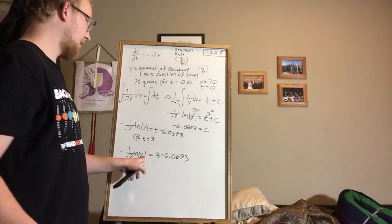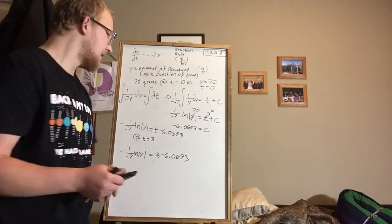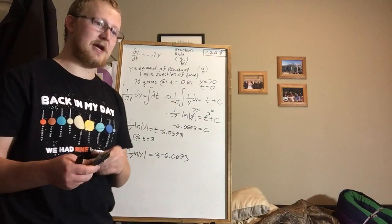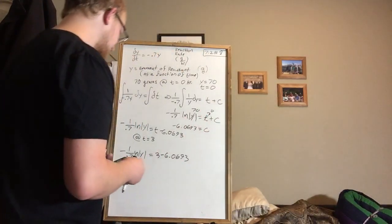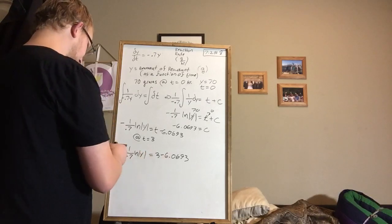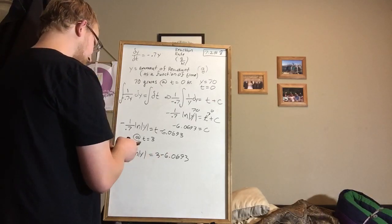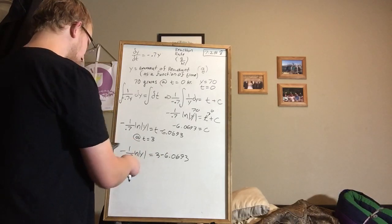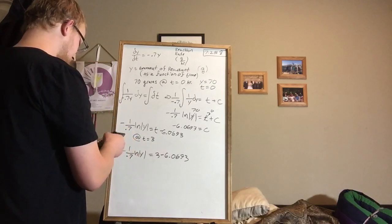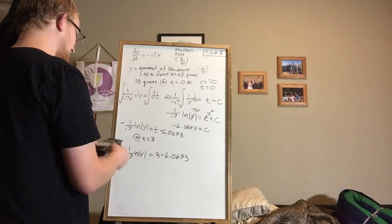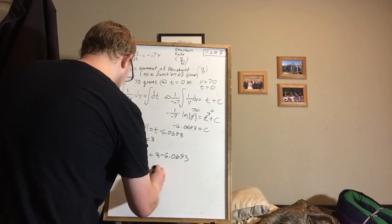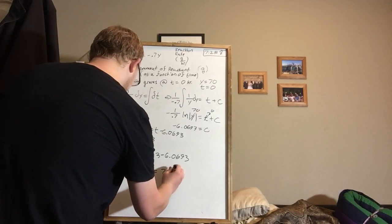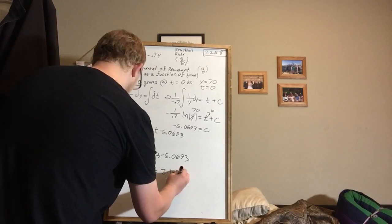And of course we're solving for y, because y is the amount of reactant. And that's what the problem is asking for, is how much reactant will be around after 3 hours. So I'm going to take 3 subtract 6.0693, then times it by 0.7 with a minus sign in front of it. And that tells me that the natural log of the absolute value of y is equal to 2.1485 roughly.